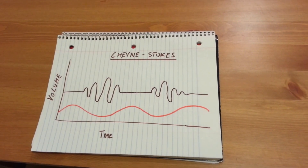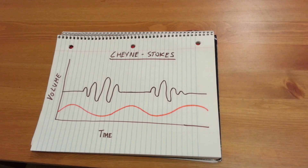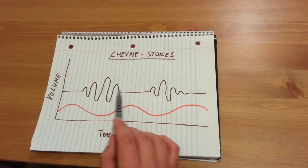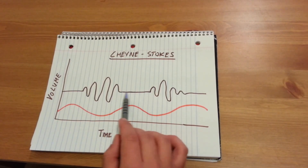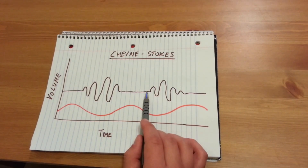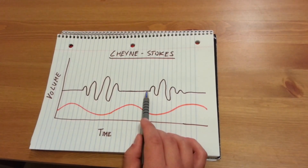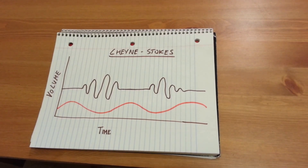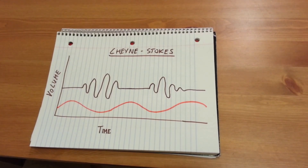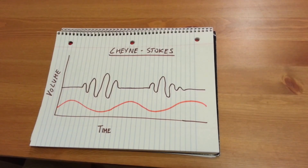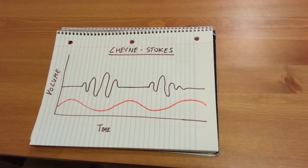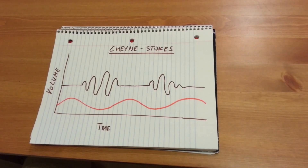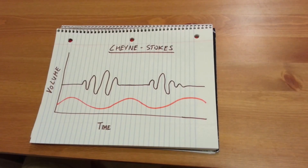The hyperventilation stages are trying to get rid of carbon dioxide, and the apneic stages are trying to increase carbon dioxide by stopping all exhalation of it. This cycling is caused by a faulty feedback system in the respiratory system, and can be caused by conditions like heart failure.